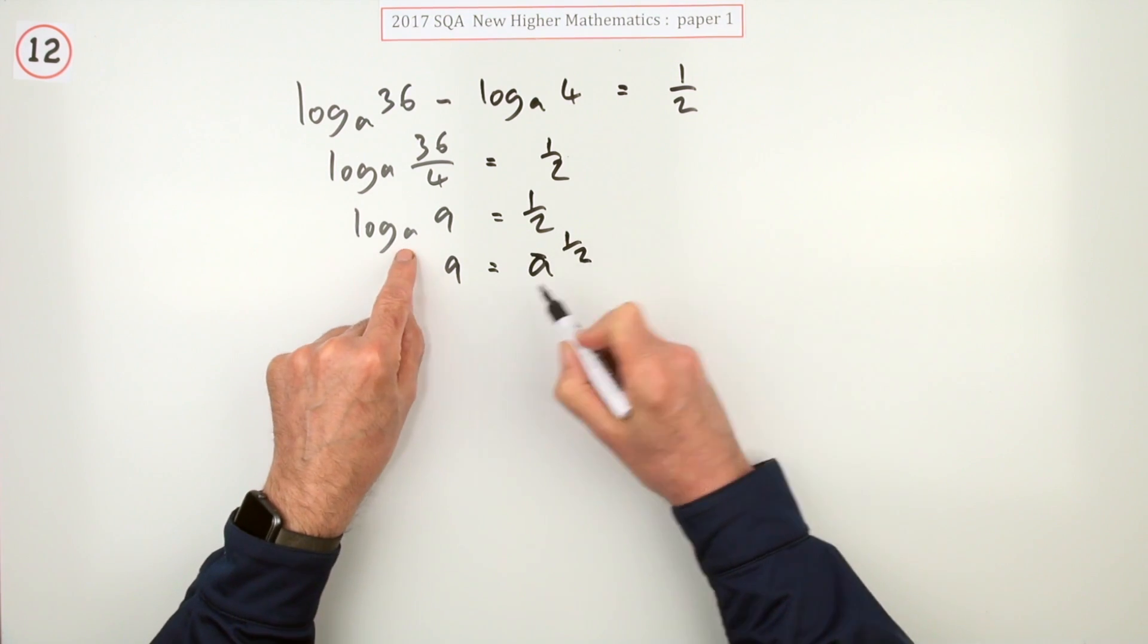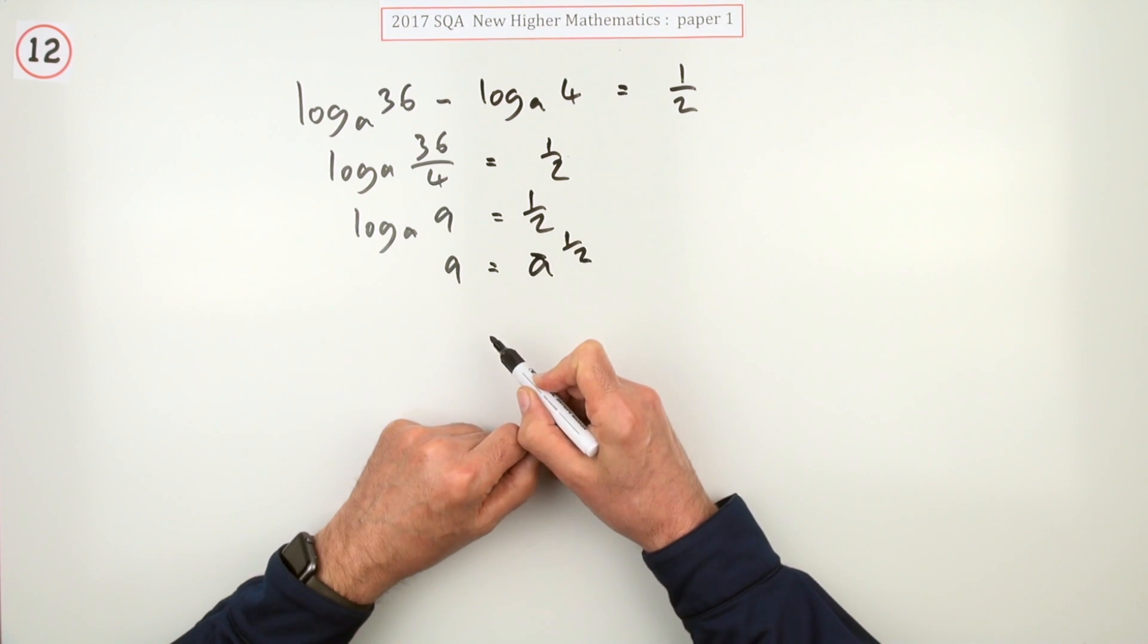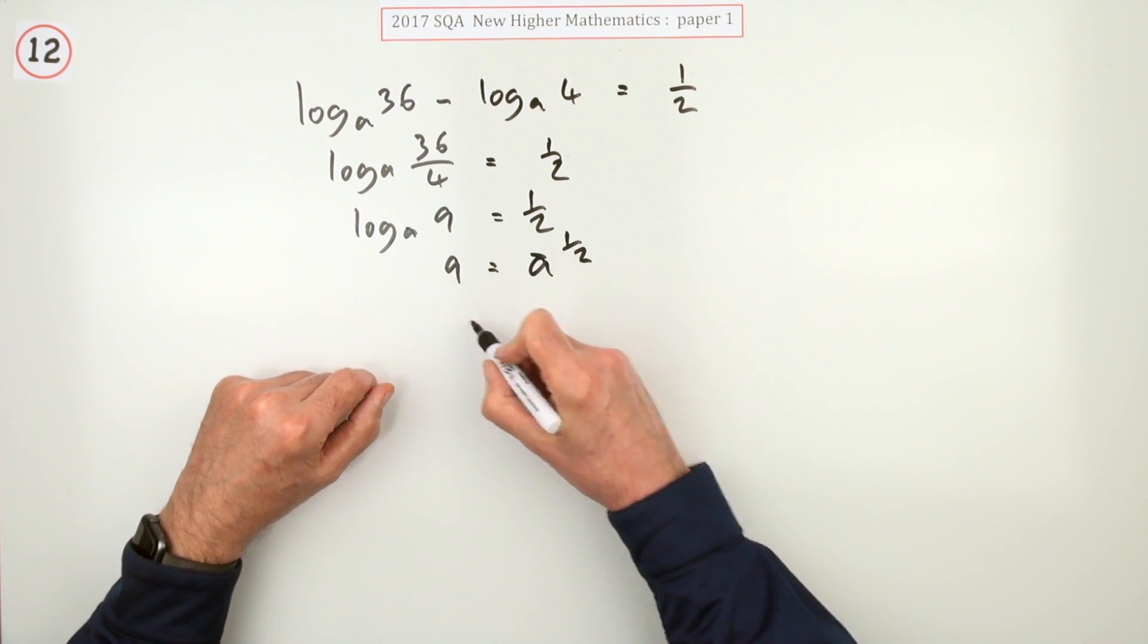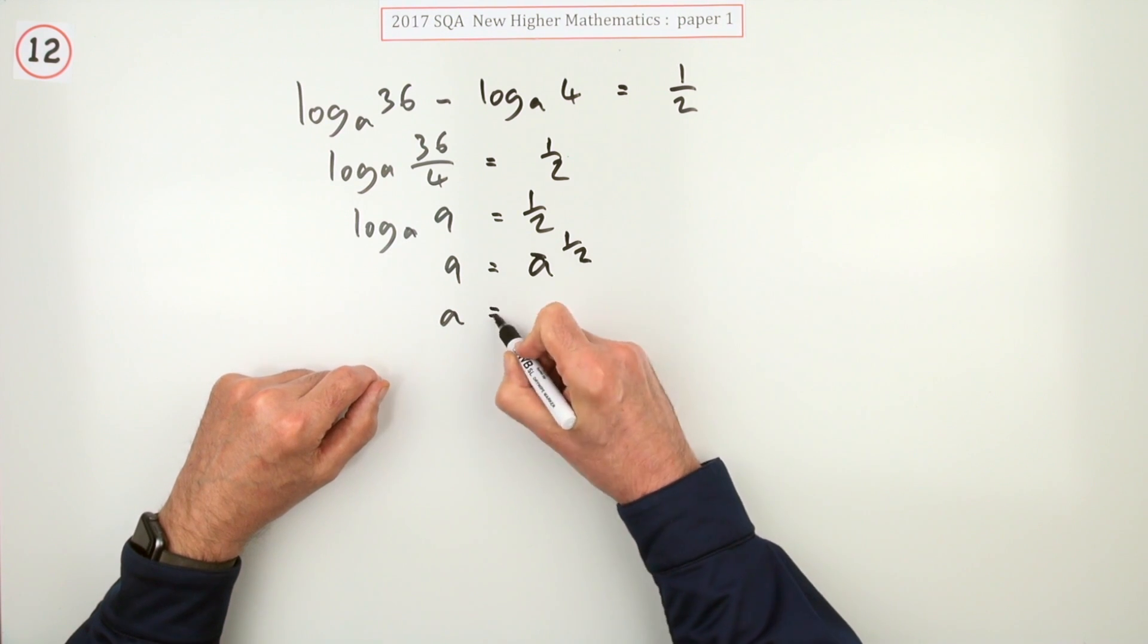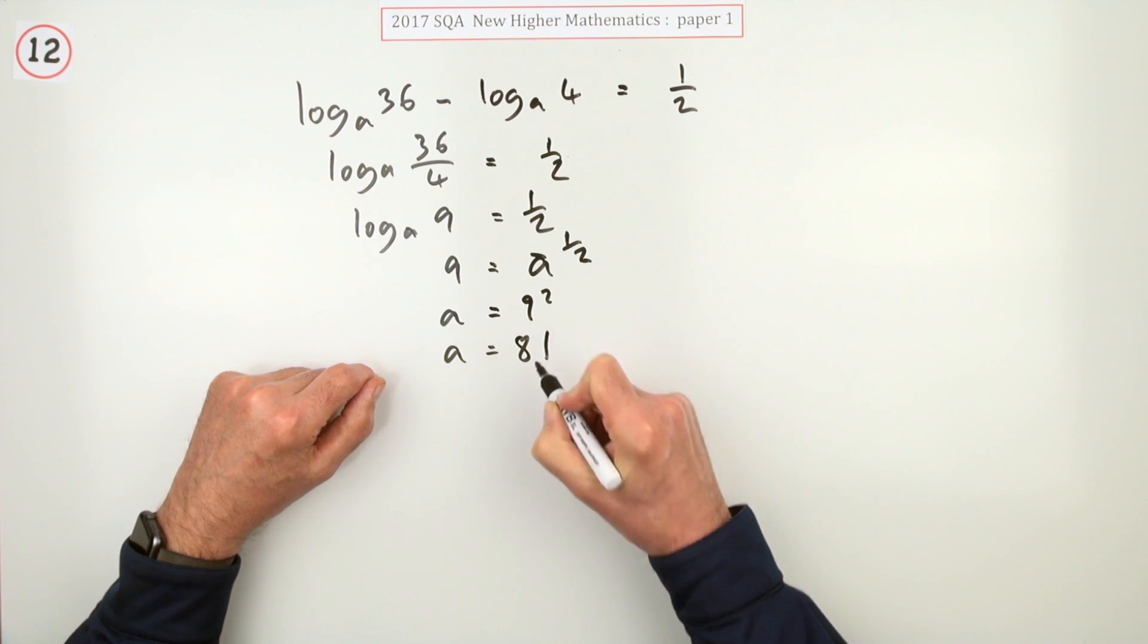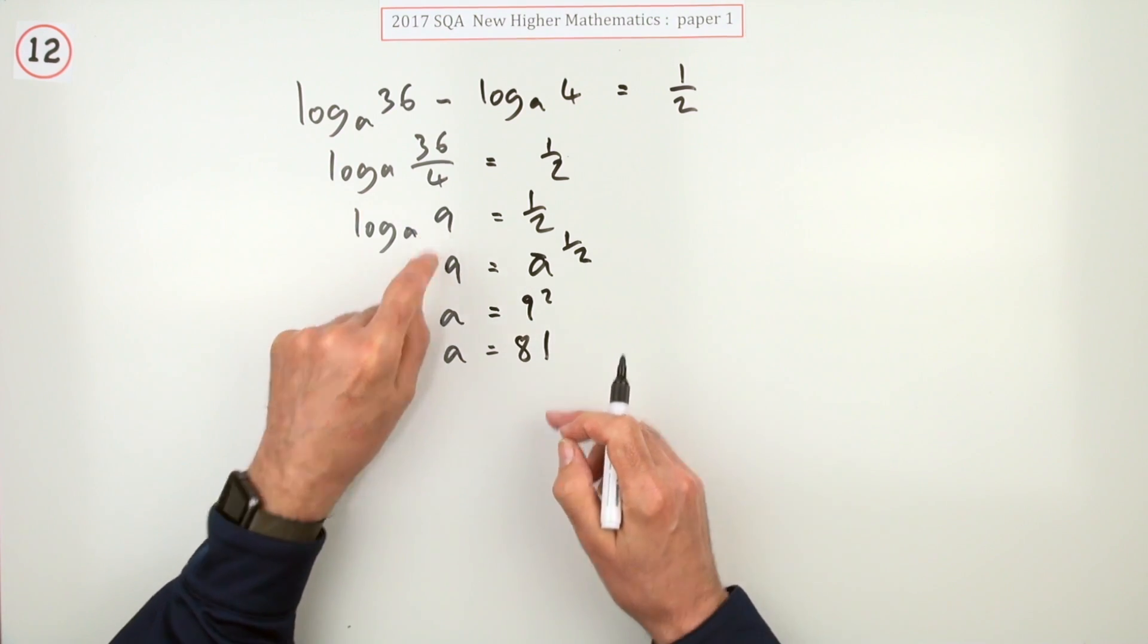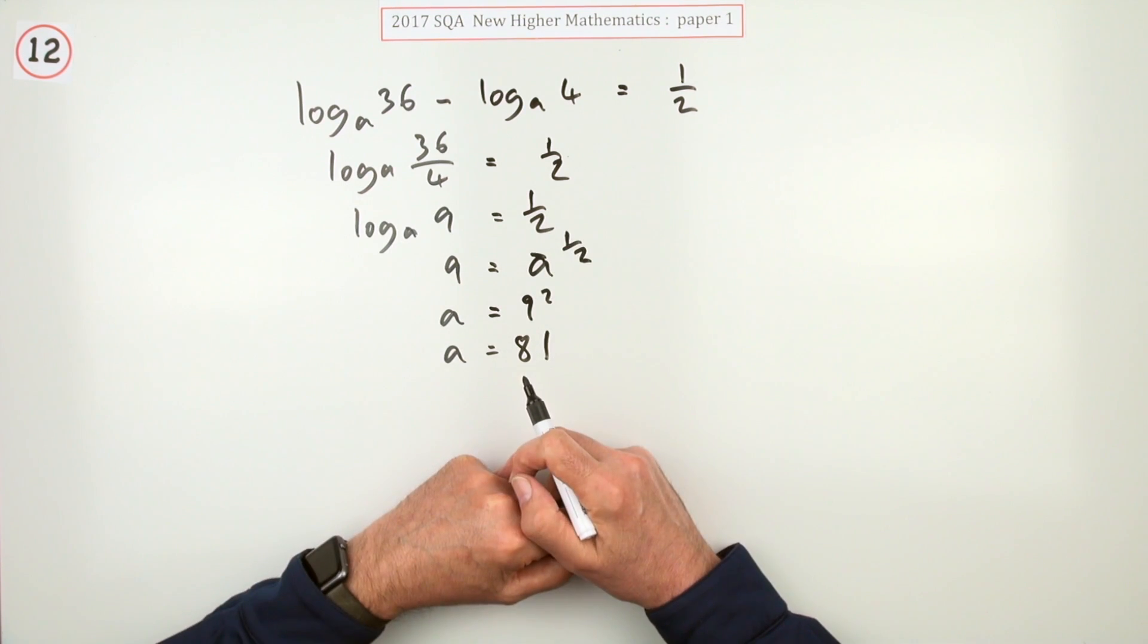That's just using the inverse of log base a, which is exponential base a. A to the power a half is 9. If a to the power a half is 9, then I'll just rearrange that. That means a will be 9 squared, so a is going to be 81. They may have guessed that straight from here because this says 9 is the square root of whatever the base is.